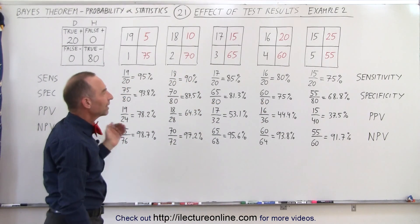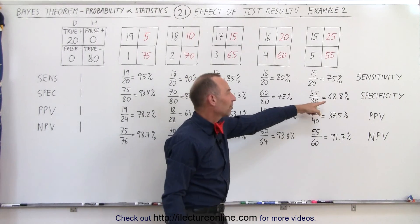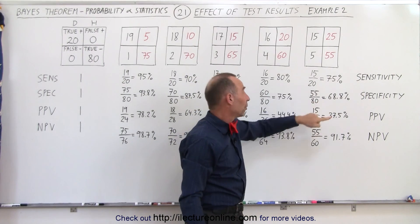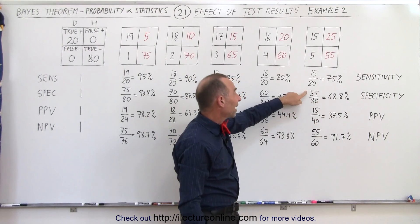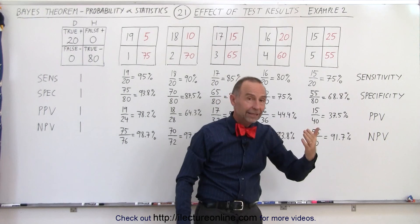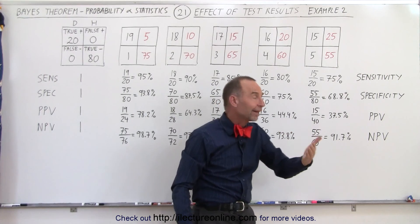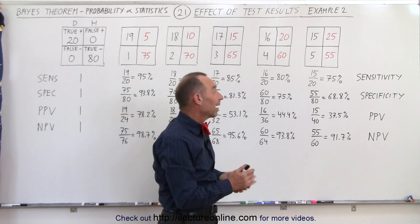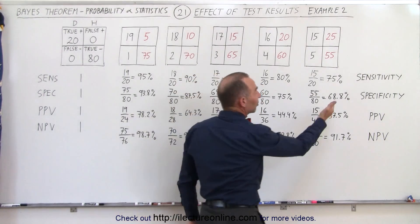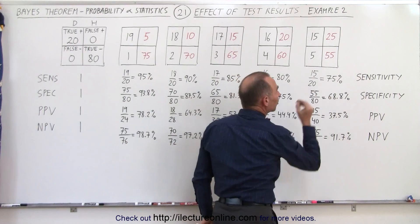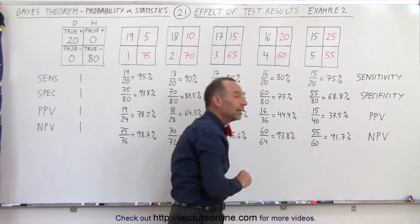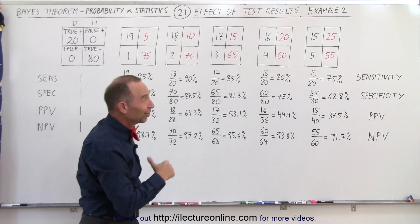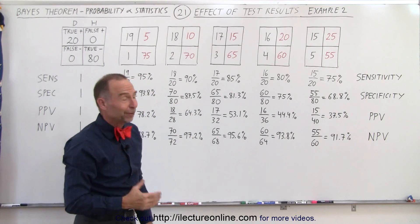Notice that at the end the specificity drops down to 68.8% when only 55 out of 80 people that are healthy truly test negative. That means that if you test negative, you have a 68.8% probability that you are indeed negative — so that's not a good number.